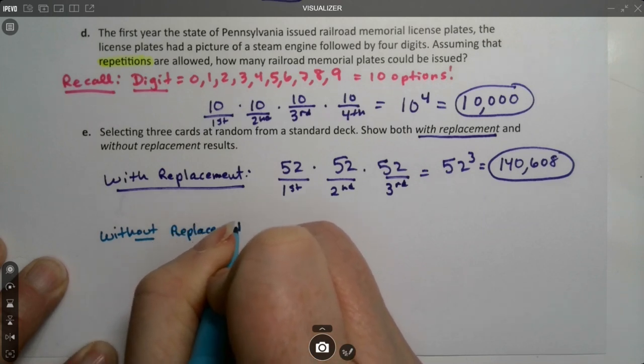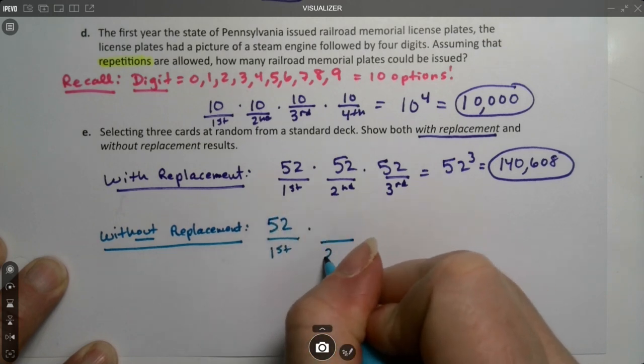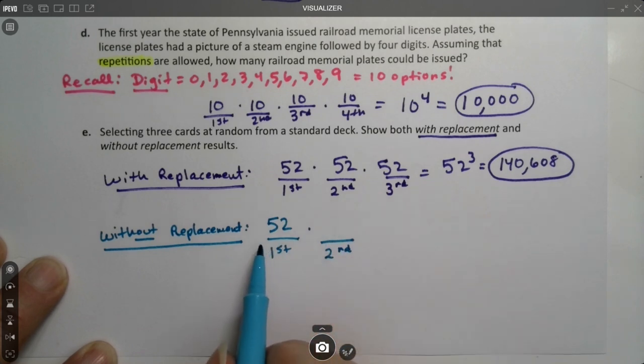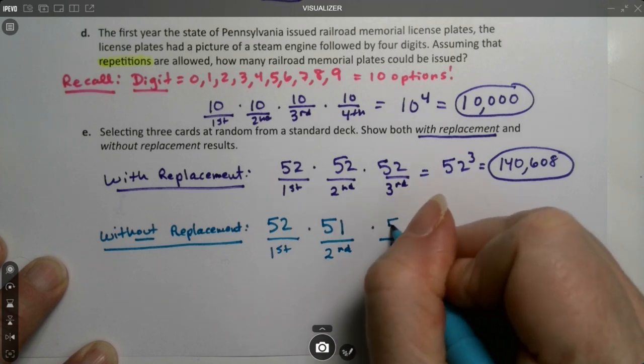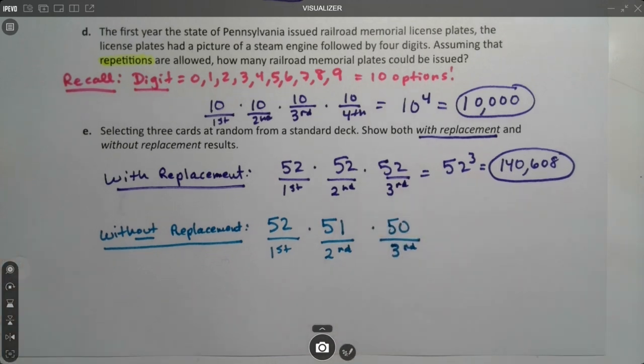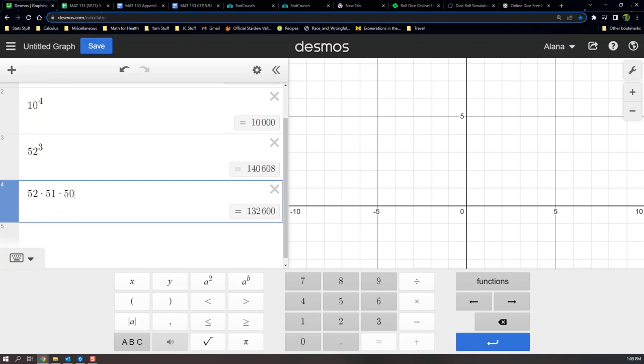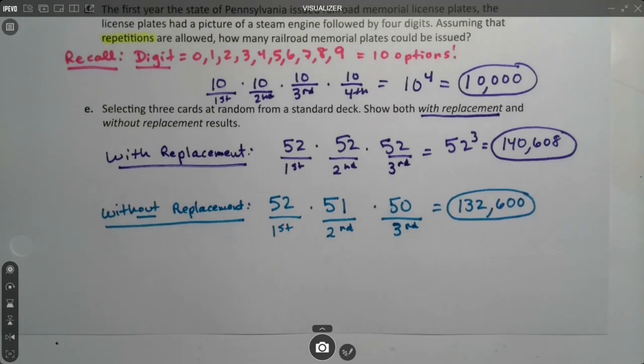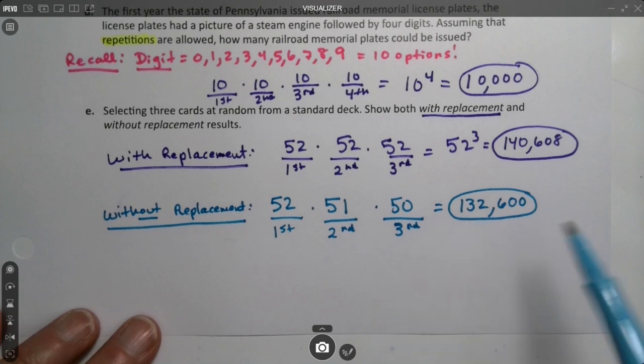Now what about the other one without replacement? That means you're not going to put the card back in the deck, which is how most card games actually work. So the first card had 52 options, but the second card, whatever card you drew is no longer in the deck, so there's now only 51 cards left. And then once you have your first and second card, for the third option there's only 50 cards left. So that's 52 times 51 times 50, which is smaller, which makes sense. You don't have as many options when you're limiting yourself.